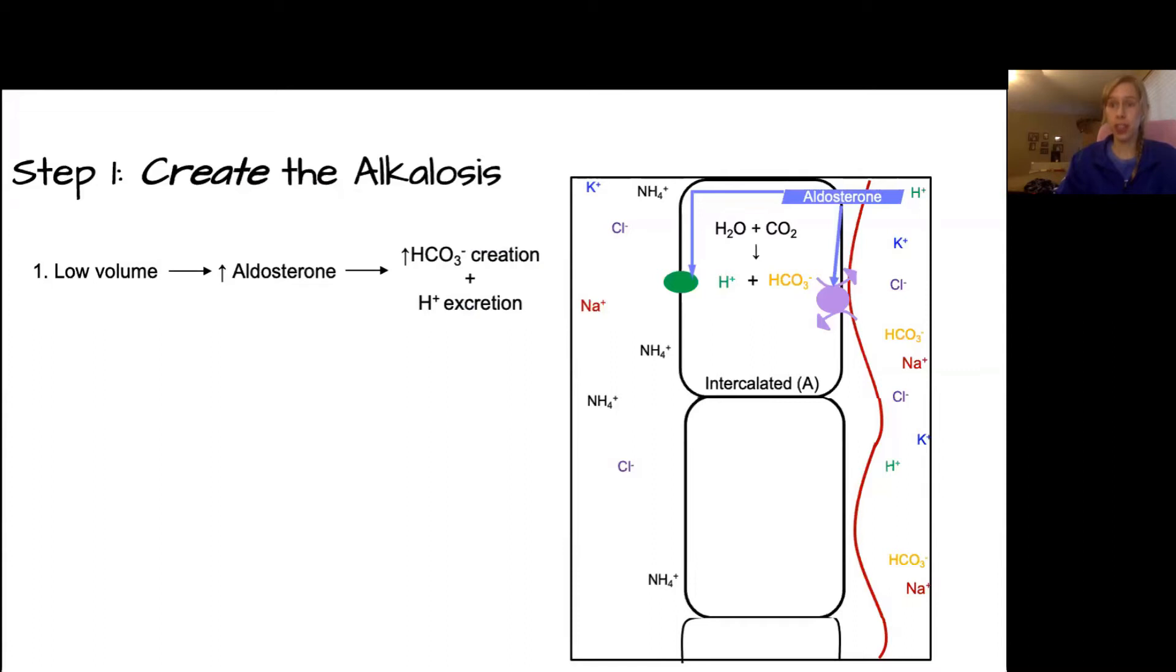To start off, we have to create the alkalosis. In a low volume state, we will have a physiologic increase in aldosterone, because the kidneys sense the low volume and trigger the juxtaglomerular apparatus to release renin, which will go downstream and trigger the aldosterone. With elevated aldosterone in the intercalated cells of the distal convoluted tubule and the collecting duct, we will have hydrogen excretion and bicarbonate creation, leading to bicarbonate being pumped into the blood and hydrogen being pumped into the lumen.